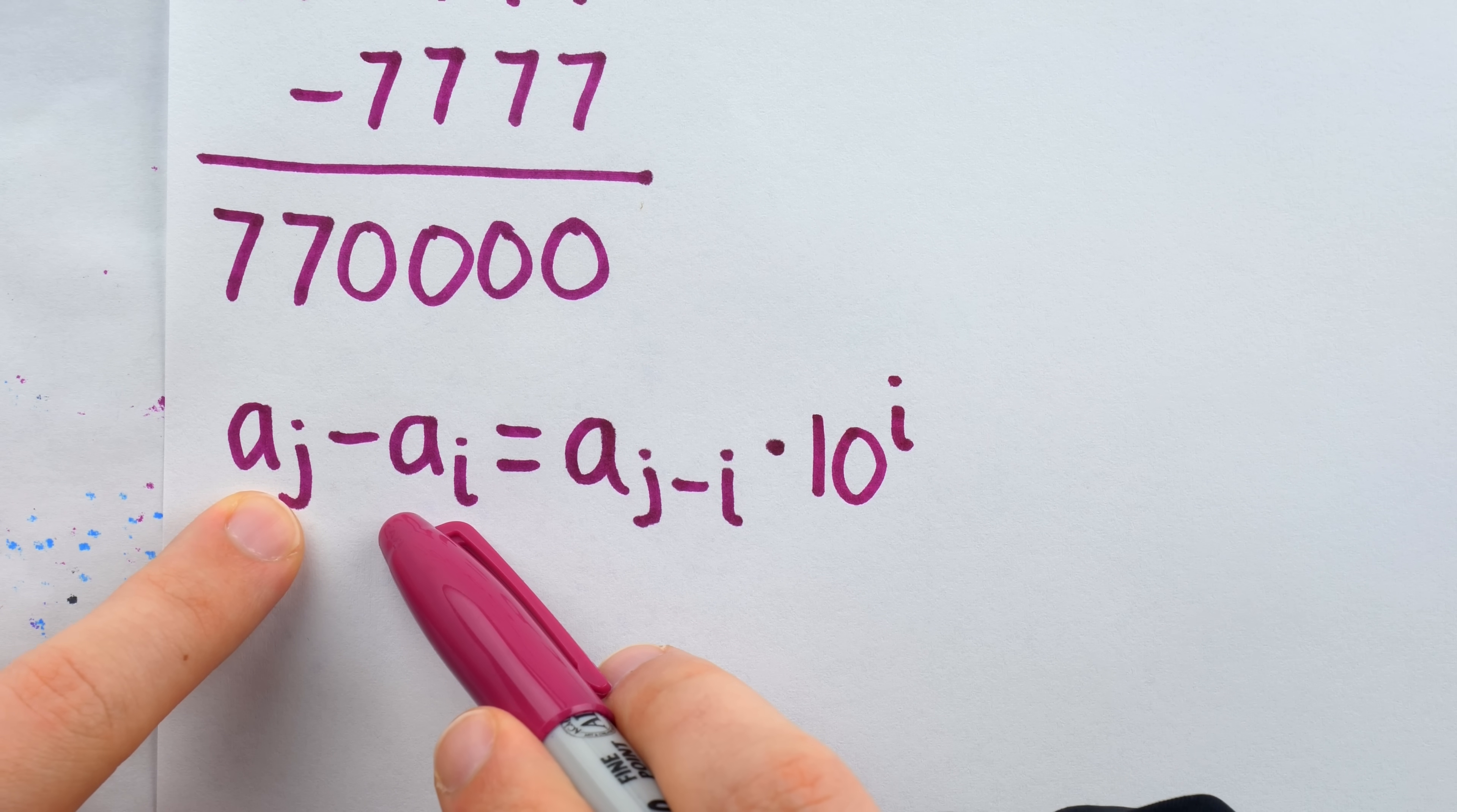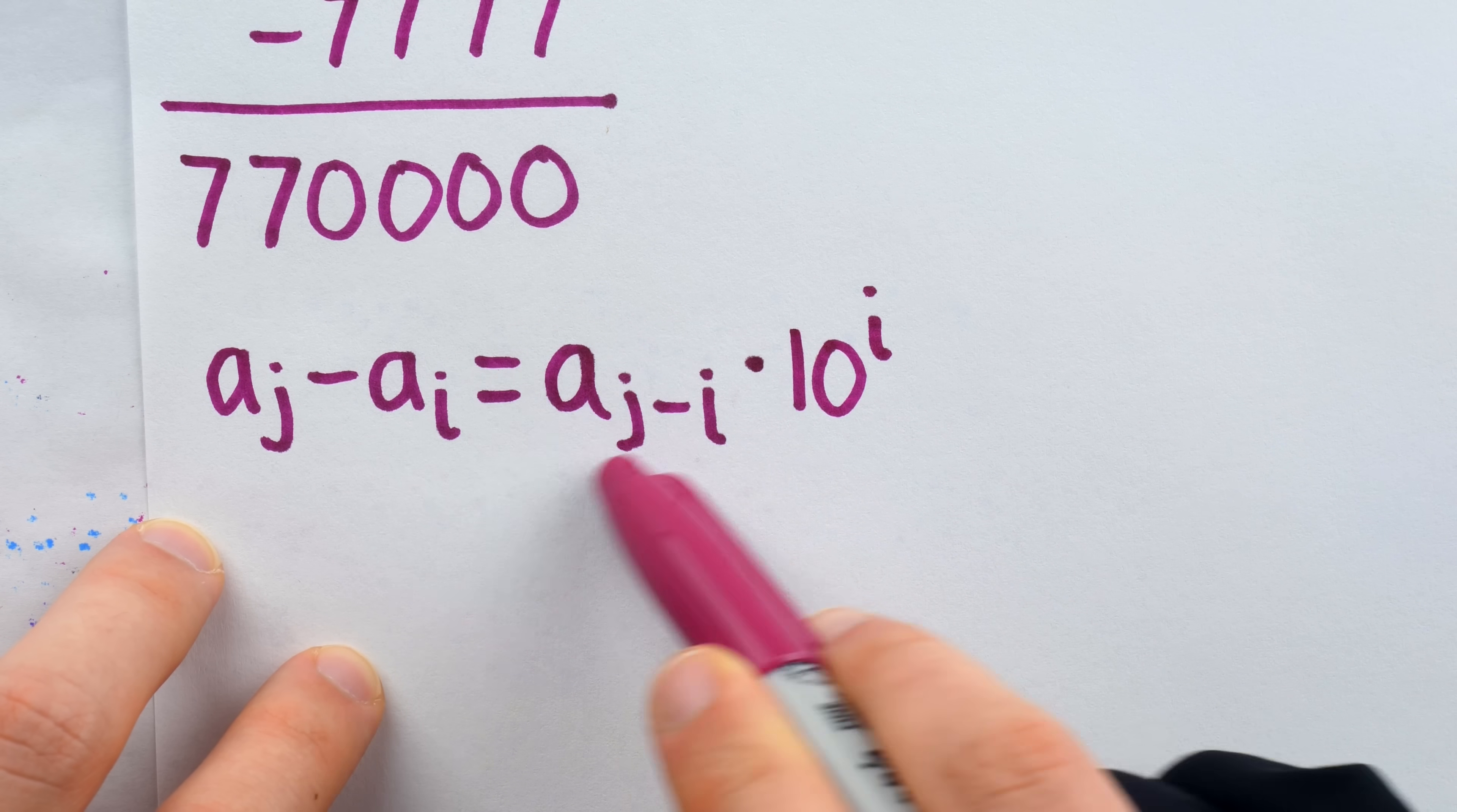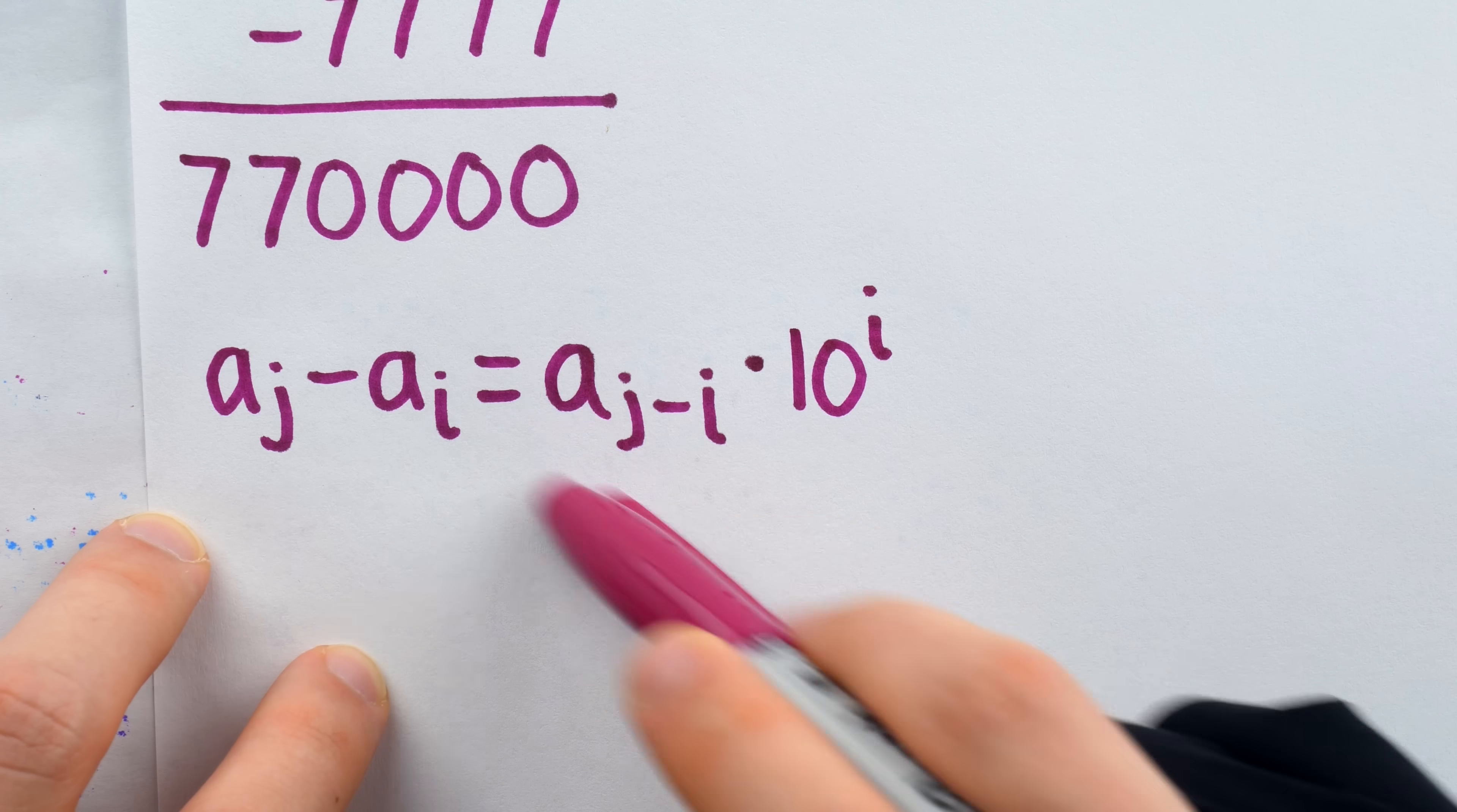Now remember, this number, which isn't a term of our sequence, this number is divisible by 2003. We already showed that it's just a multiple of 2003. But now we've expressed it as something that is a term of our sequence, A_(j-i), times a power of ten. So because it's equal to this, this has to be divisible by 2003.